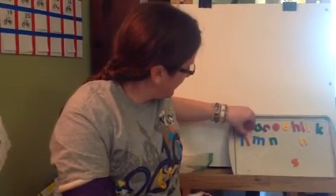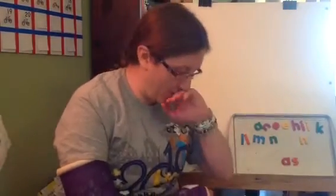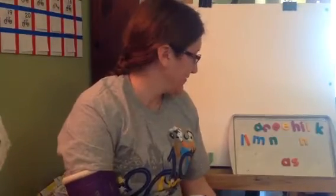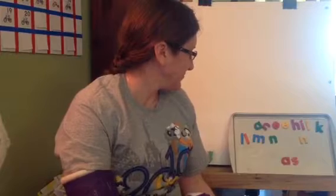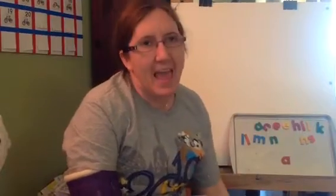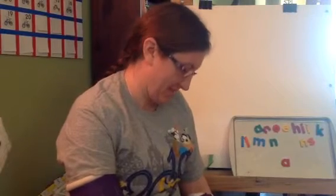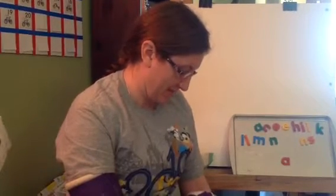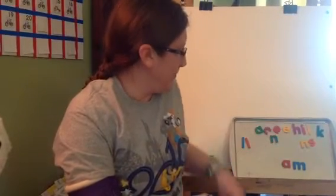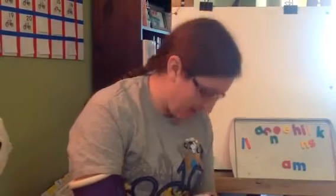I'm gonna trade my I and A to make the word as. If you haven't made the word as, make sure you add it to your list. And I'm gonna take the S away and make the word A by itself. If you don't have A, add it to your list. I'm gonna put an M to make the word am. If you don't have the word am, you can add it to your list.